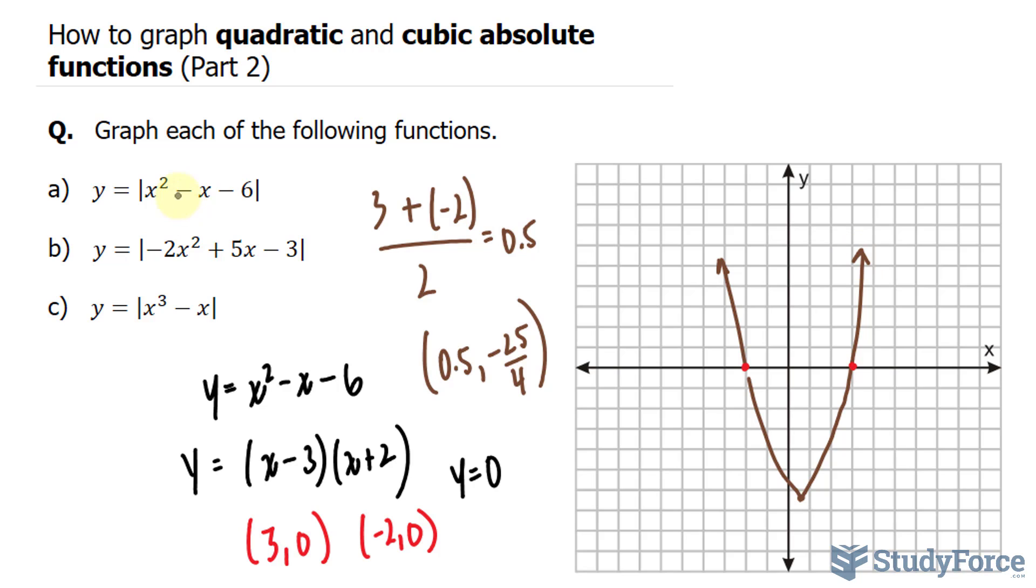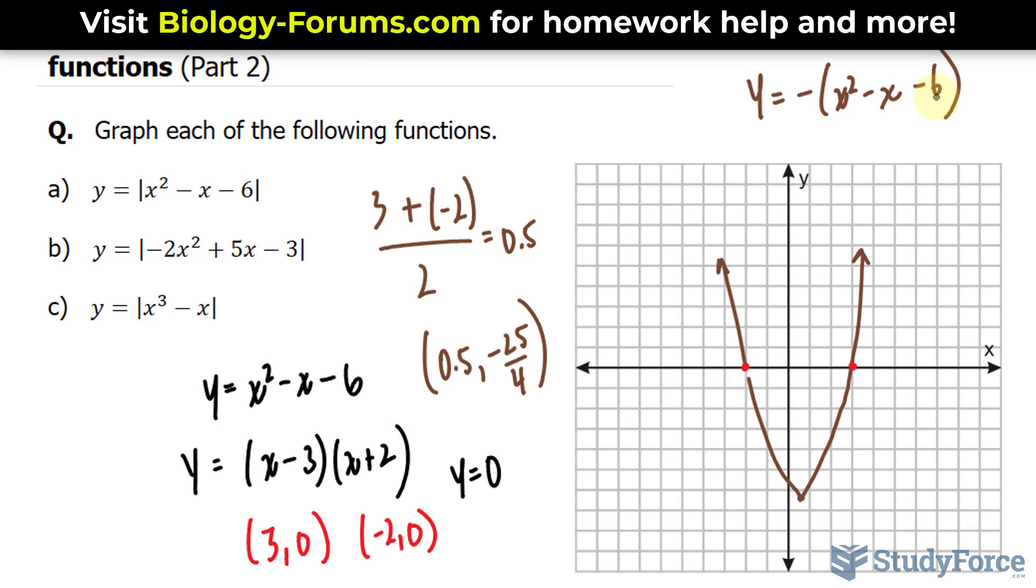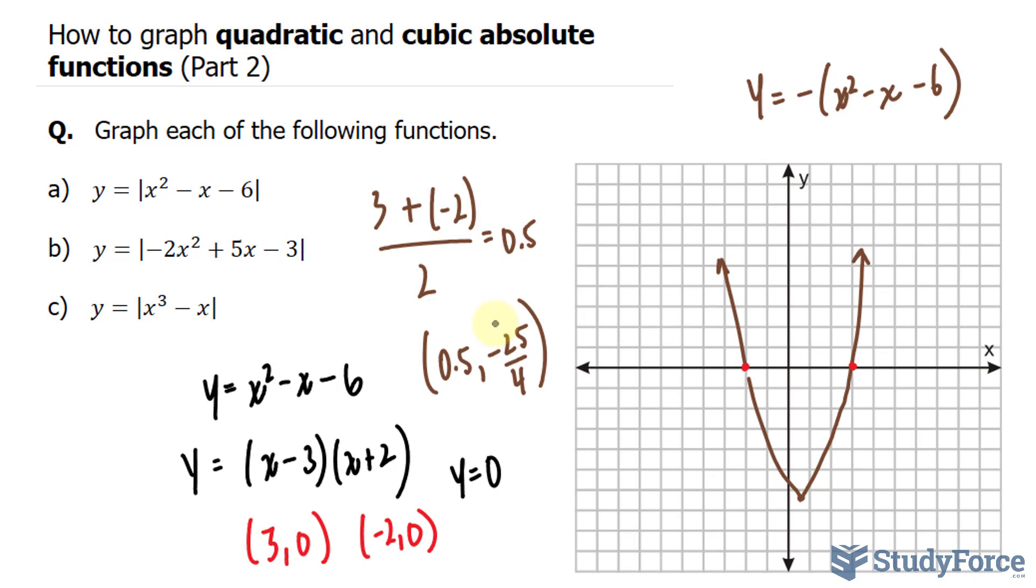Now, you have to redo this as if this were negative. So you're supposed to find out what your vertex is if we had y is equal to negative bracket x squared minus x minus 6. And you'll find out that if you solve for your x-intercepts, you'll end up with the same two points. However, your vertex will be different. Rather than being 0.5 and negative 25 over 4, it'll be 0.5 and positive 25 over 4, which is positive 6.25.